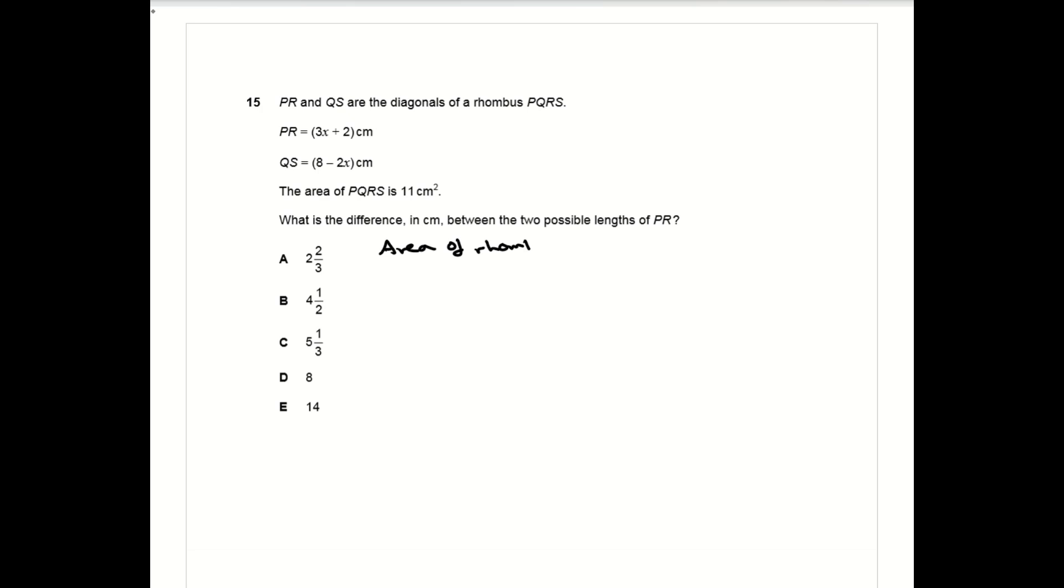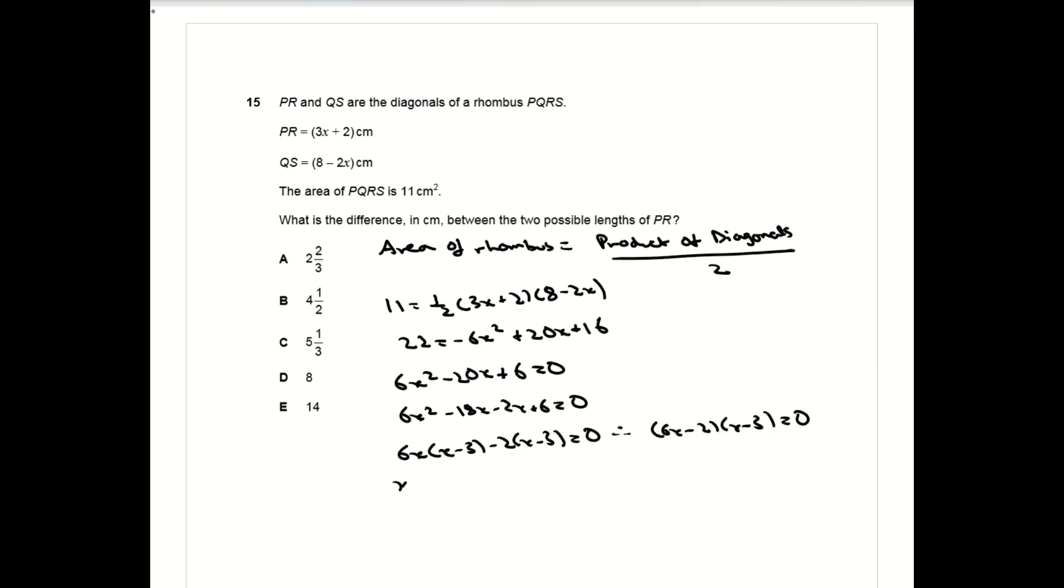Question 15 relies on you knowing the very specific fact that the area of a rhombus is equal to the product of the diagonals over two. So you take the two diagonals PR and QS and multiply them together to set up a quadratic equation in terms of x. When you factorize this, it gives you six x minus two times x minus three equals zero.